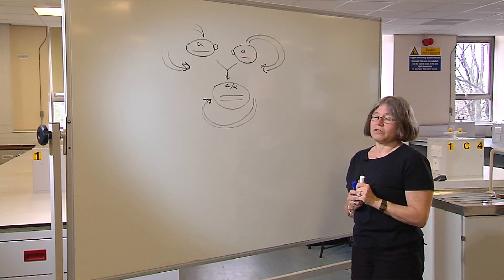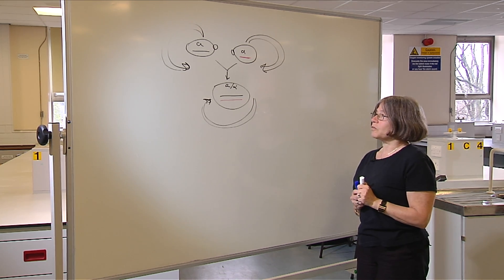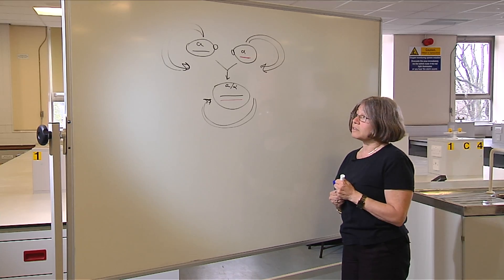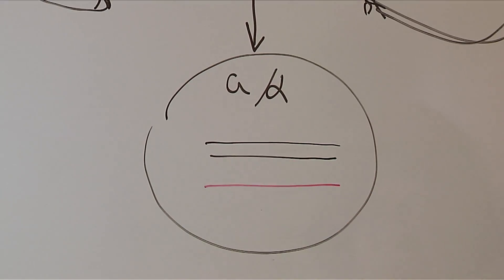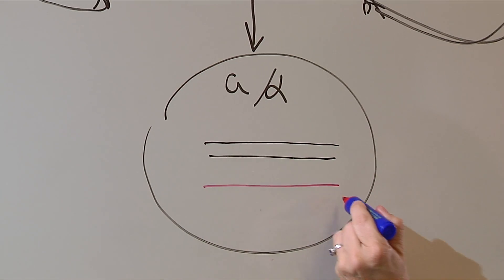But the beauty of yeast is that it can also be forced to undergo a process called meiosis, which is the formation of gametes, just like when a human makes eggs and sperm. The first thing that happens when you trigger meiosis is that the chromosomes actually replicate, so there are actually four copies.